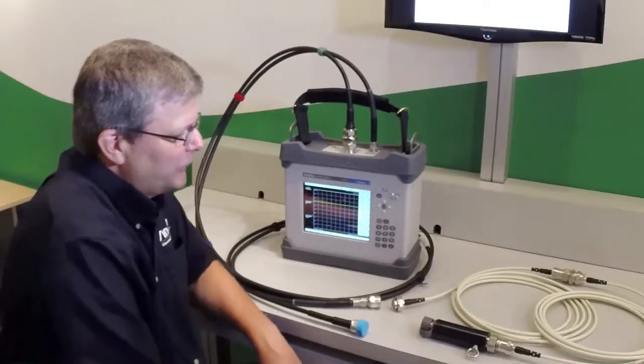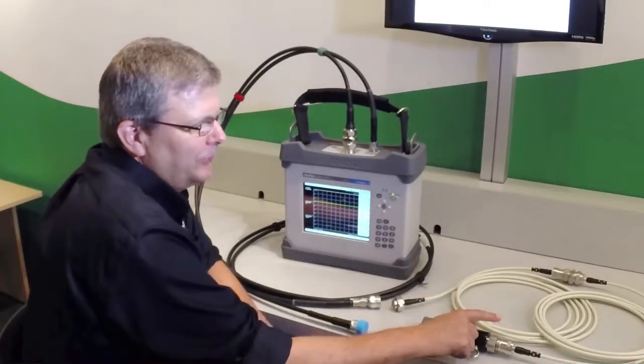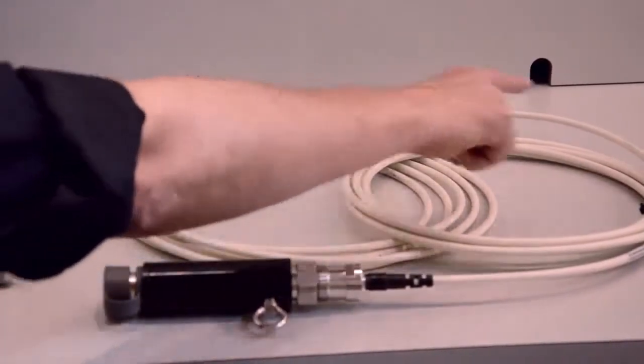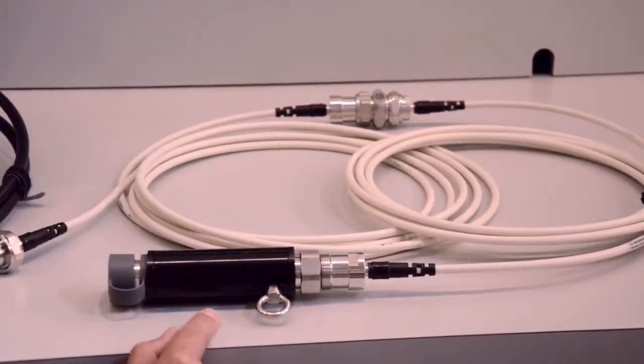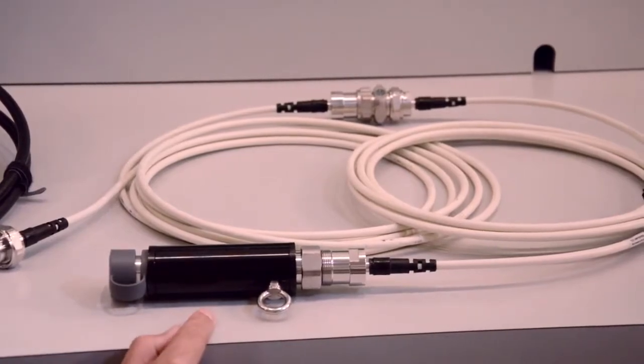The system that we're going to demonstrate on today is two 5-meter cables with a PIM standard installed at the end of the first 5-meter cable and a low PIM termination installed at the end of the cable. In this case, the low PIM termination will be simulating the antenna on the system.